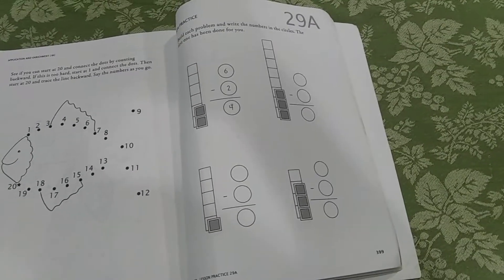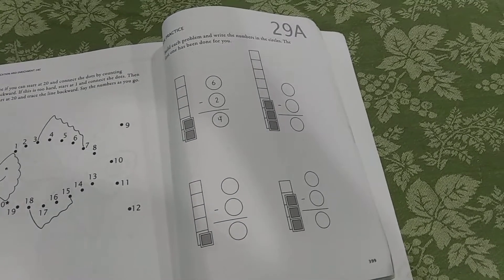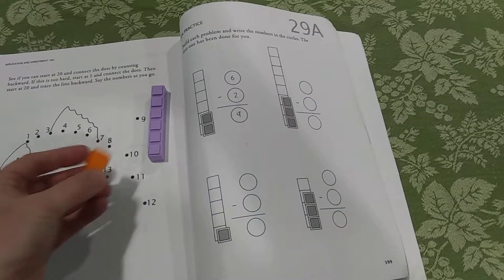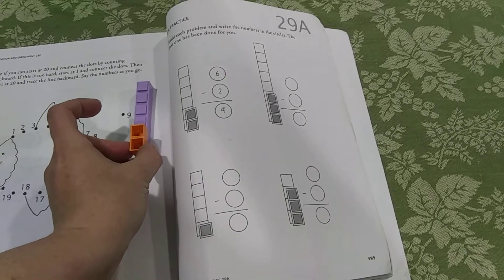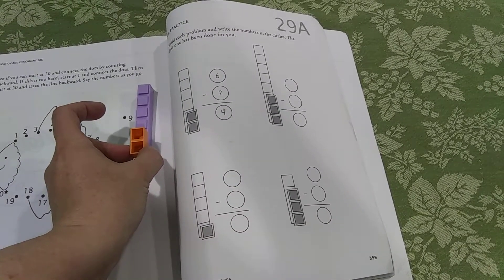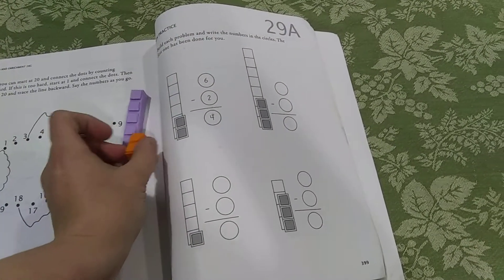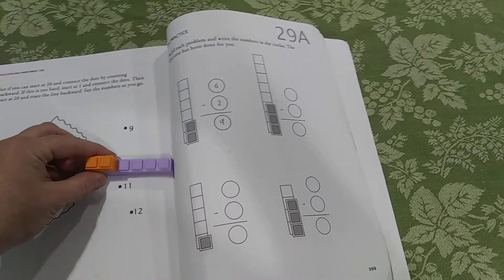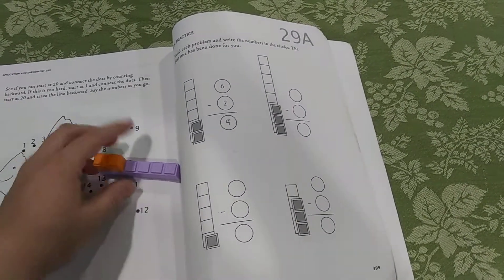And in the end of the book, they're going to get into subtraction. So they'll actually pull out the sixth block, and I think Mr. Demme puts it upside down to say that there are two missing, so there's only four left, but I always build it and say six take away two, what's left. But that's how I do it. So that is the Primer level.